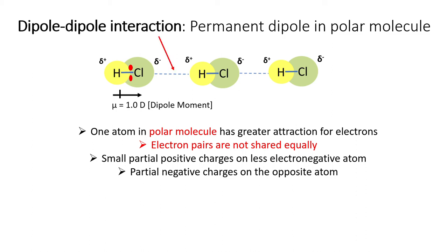Examples of molecules with dipole-dipole interactions are sulfur dioxide and fluoromethane.